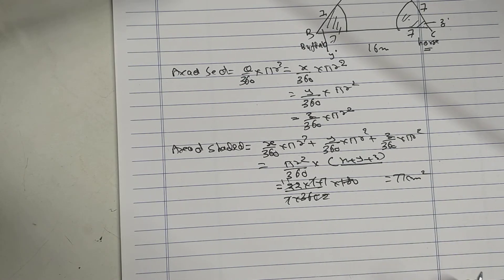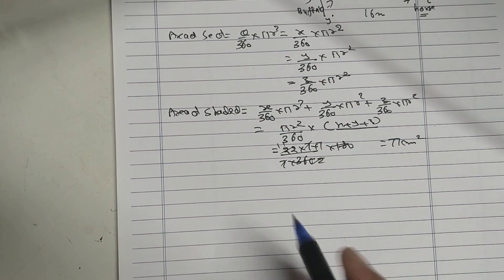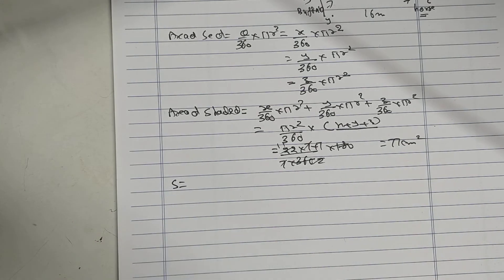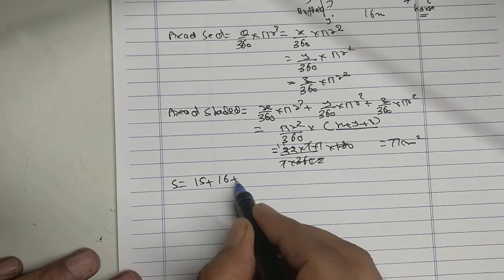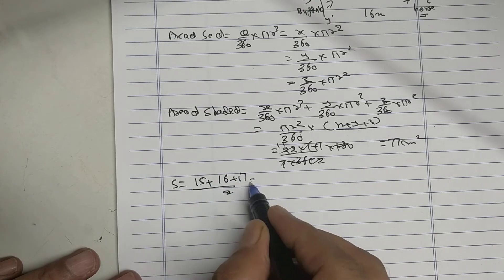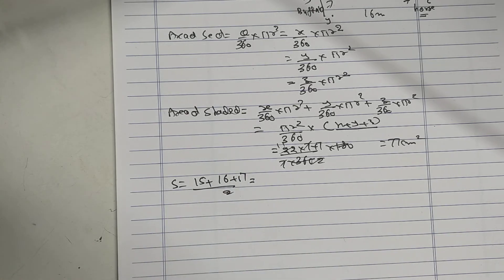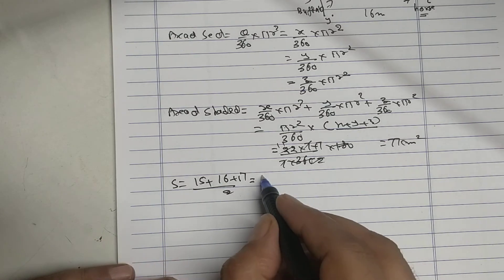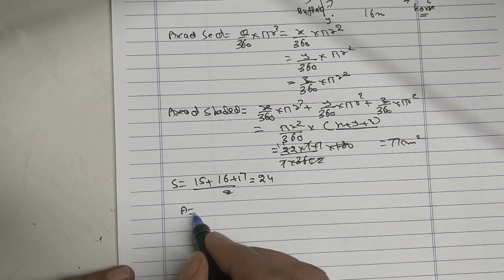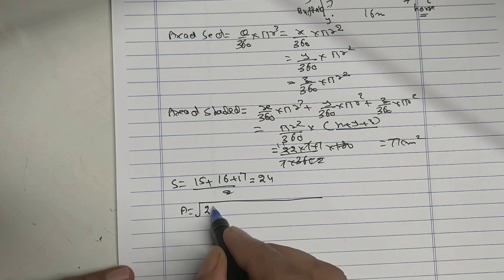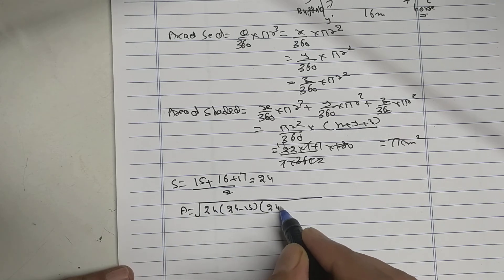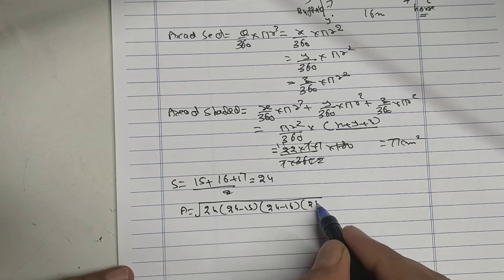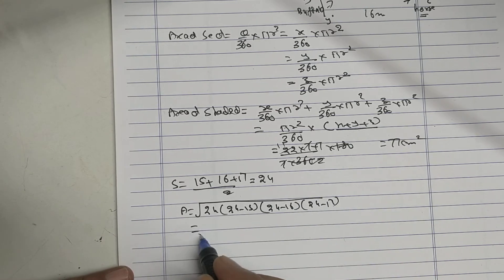Now find the area of triangle using Heron's formula. s = (15+16+17)/2 = 24. So area is √[24(24-15)(24-16)(24-17)] = √[24×9×8×7].